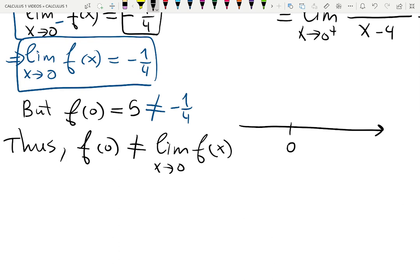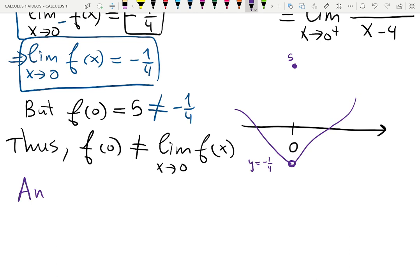And the sketch will look like so. When I had 0 over here, from the left, the function was going to the height y equals negative 1 quarter. From the right, it was going to the same height, negative 1 quarter. But at 0, it ended up to be a hole, and the value at 0 is 5. So we have answer for this point. Answer. x equals to 0 is a hole.